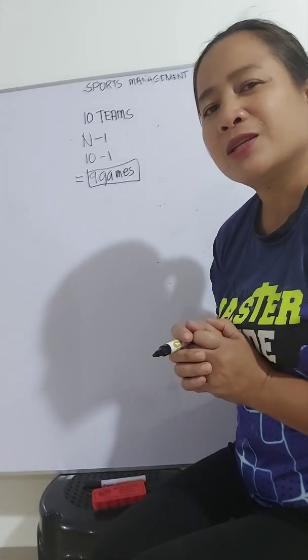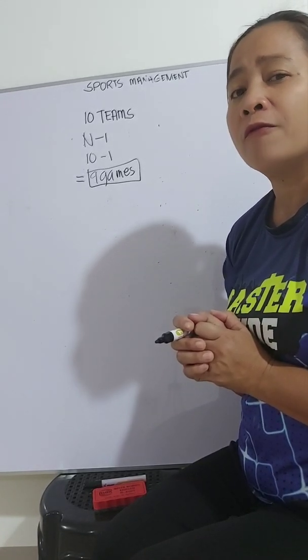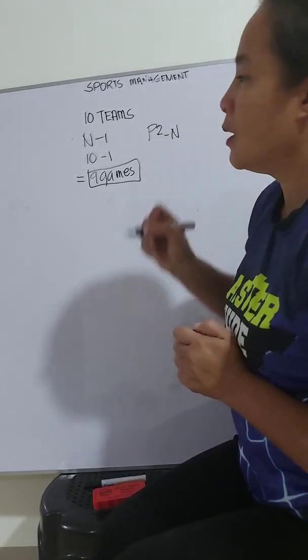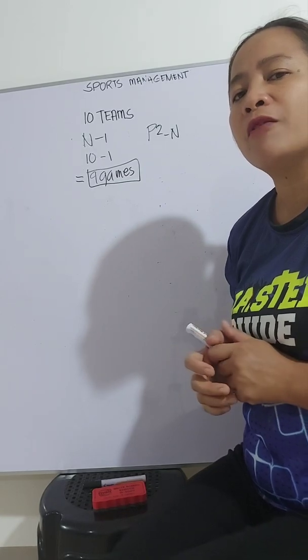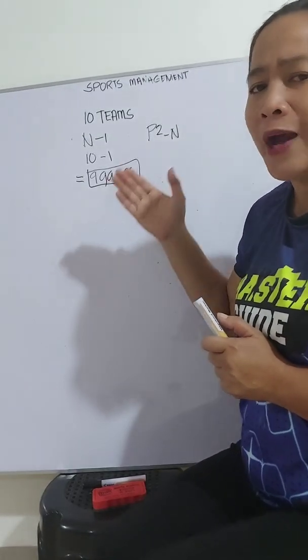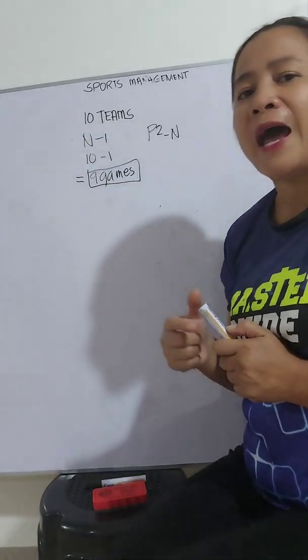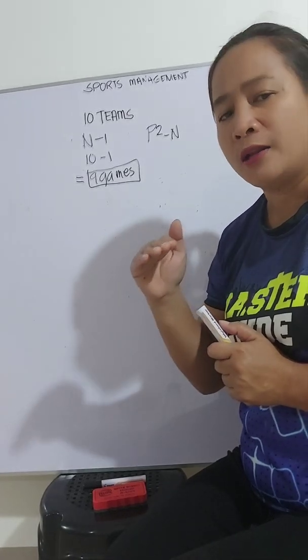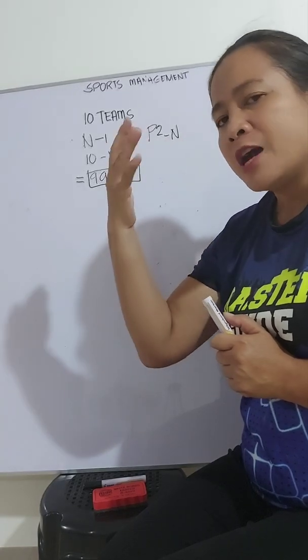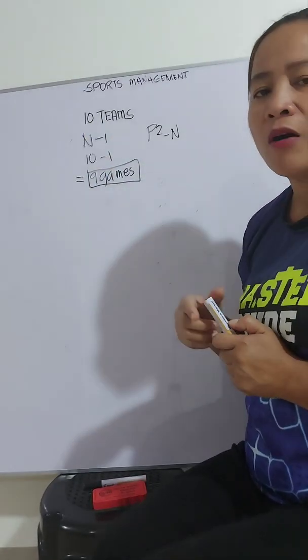Now let's proceed to power of 2 minus N to identify the number of byes. As you can see, power of 2 here is 16. So why not 8? Because the result is negative. Remember that it should be equal to the number of power of 2 or beyond the number of our teams.